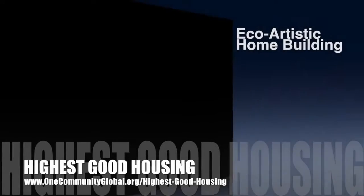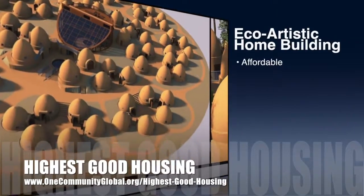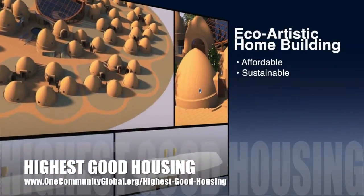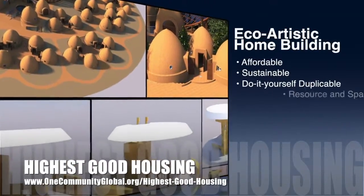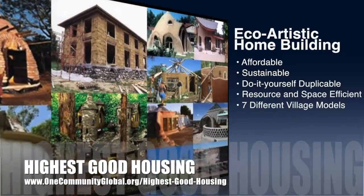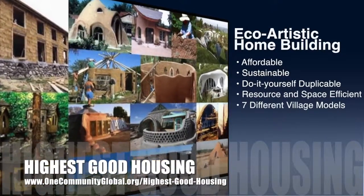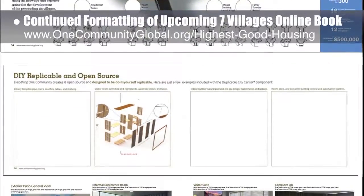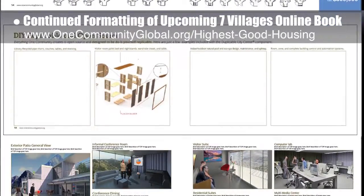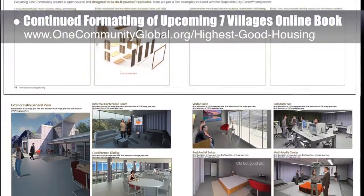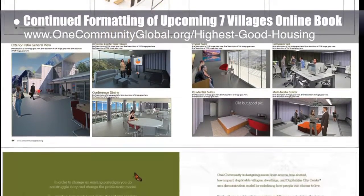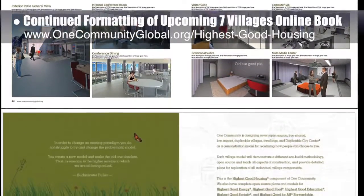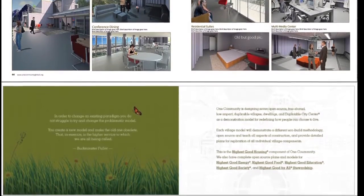One Community's approach to highest good housing is eco-artistic home building that is affordable, sustainable, do-it-yourself duplicable, resource and space efficient, and consists of seven different sustainably constructed village models. This week, the core team continued updating the formatting of the pages for the upcoming Seven Villages online book. This week's work focused on creating a new Treehouse Village Pod 7 layout and more revisions in layout and formatting updates for the Duplicable City Center and Shipping Container Village Pod 5 pages.